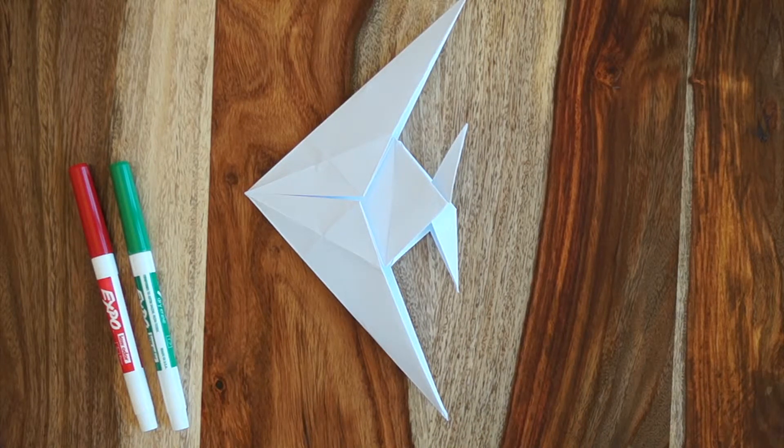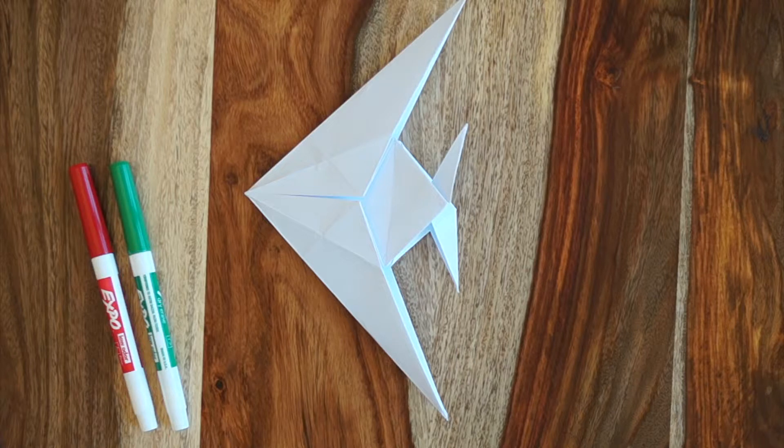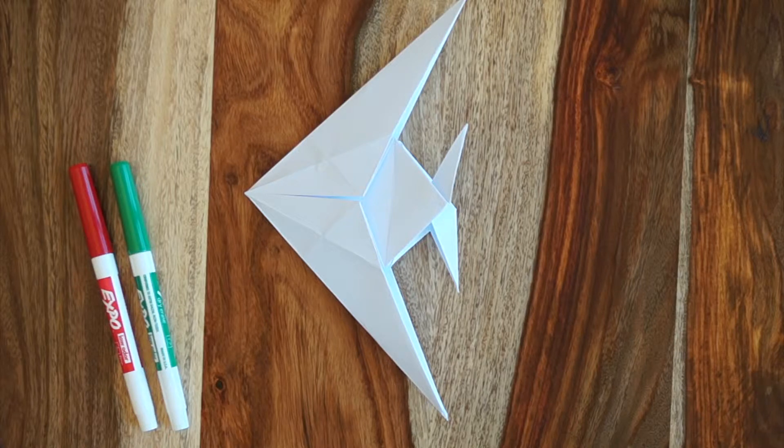But what we're going to do is color this and then unfold the piece of paper. That way we can see when we're finished, once the paper is all open again, the patterns that went into folding this and where the different parts of the origami are on the original sheet of paper.